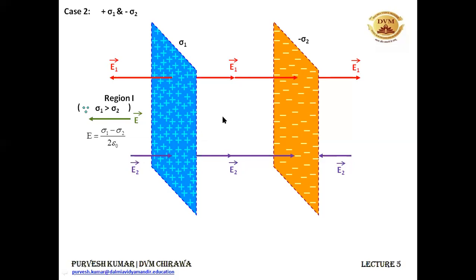In region 2, E1 and E2 are both acting along the same direction. Since they are acting along the same direction, the net electric field will also be in the direction of E1 and E2, and the net electric field is the sum of E1 and E2, that is sigma 1 upon 2 epsilon naught plus sigma 2 upon 2 epsilon naught.